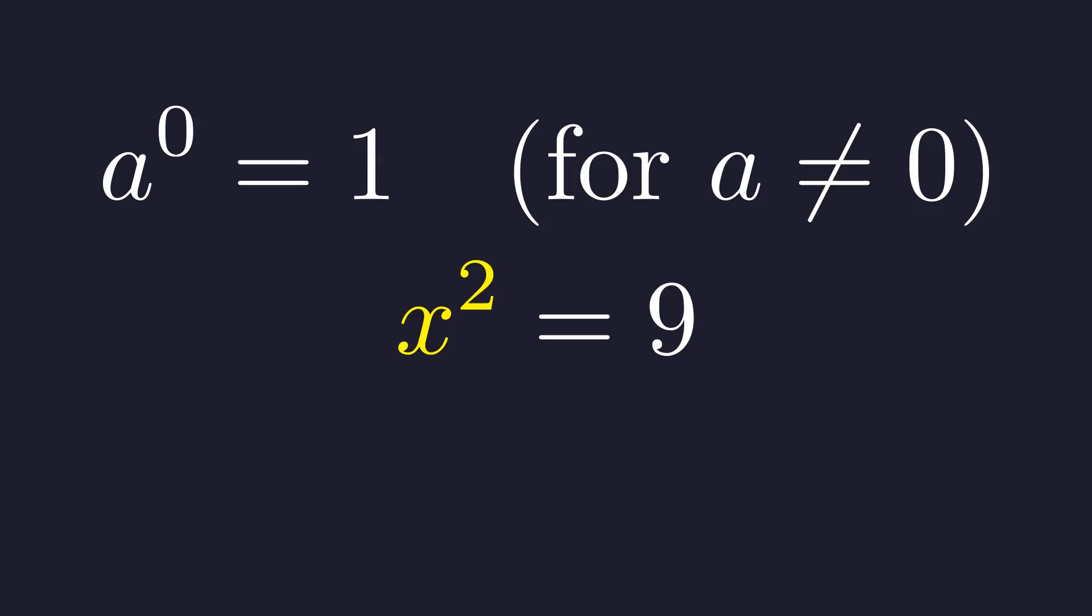Now, to solve for x, we take the square root of both sides, remembering to include both the positive and negative roots. This gives us x equals plus or minus the square root of 9. The square root of 9 is 3, so we have two potential solutions from this case.